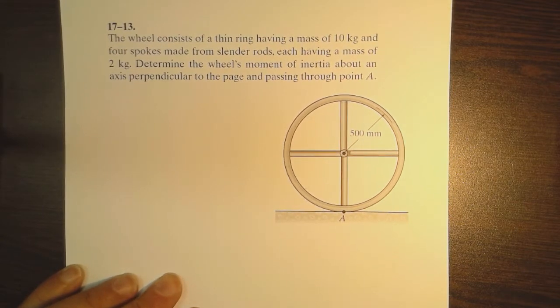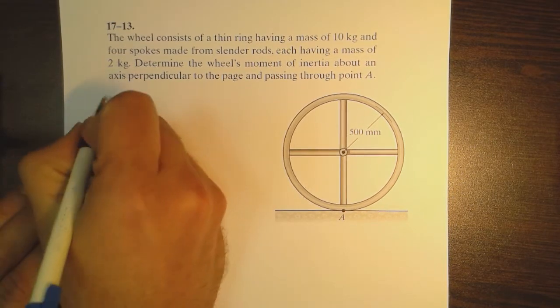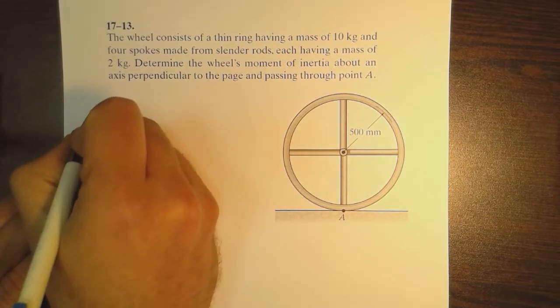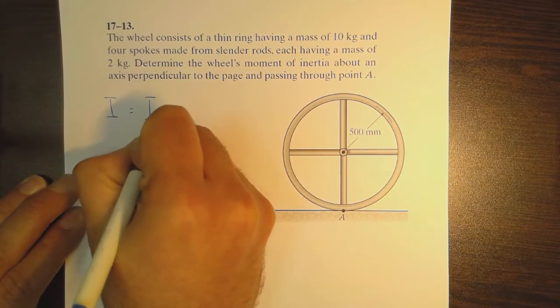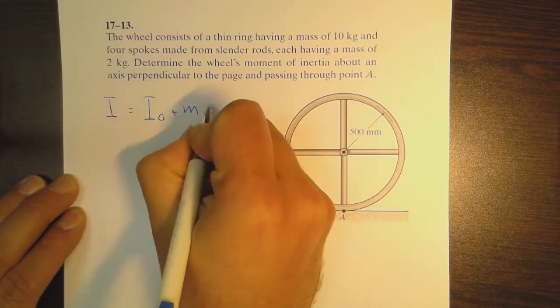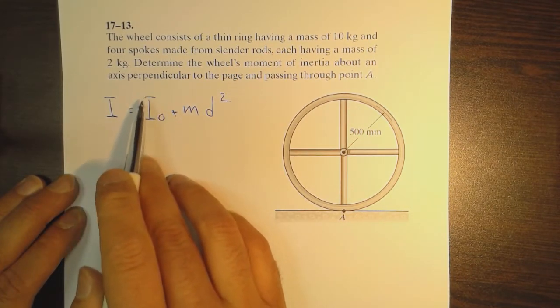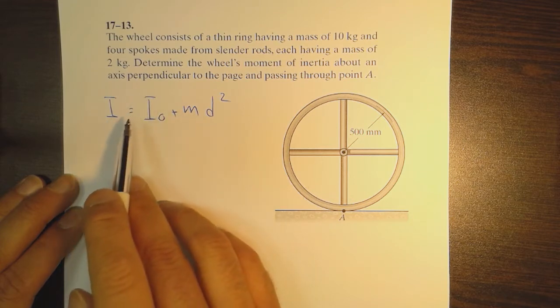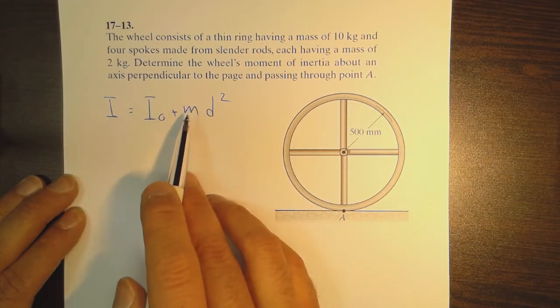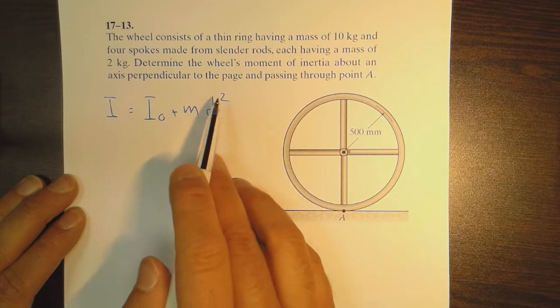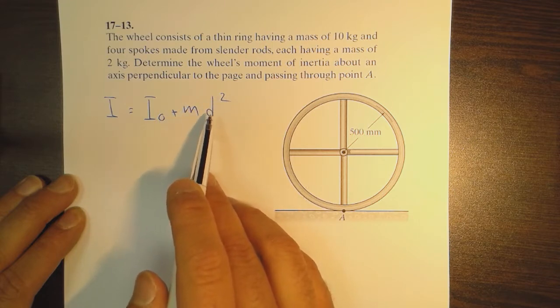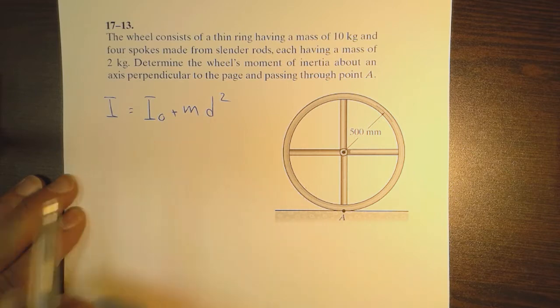We are going to use the parallel axis theorem which says that in its general term I equals I₀ plus md². The moment of inertia I₀ is the moment of inertia of an object around its centroid, m stands for the mass, and d represents the distance between the parallel axes.